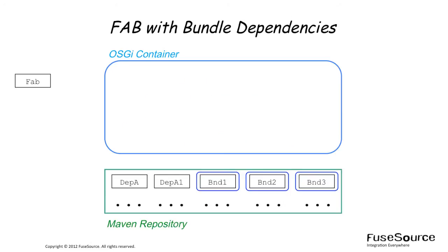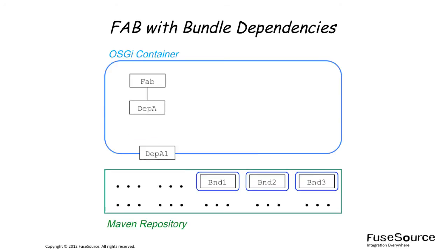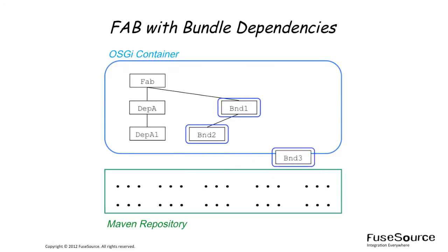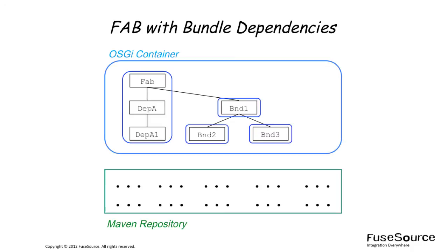In reality, when you deploy a FAB, its dependencies are neither completely shared nor completely non-shared, but a mixture. By default, any dependencies that are plain JARs are treated as non-shared, and any dependencies that are OSGI bundles are treated as shared. The final option shows the typical mix: after installing the FAB and downloading all dependencies from Maven, the FAB runtime deploys OSGI bundles as OSGI bundles, and plain JAR dependencies are embedded in the FAB bundle. When you start this hybrid FAB using the FAB start command, the bundle dependencies are started first, and then the FAB bundle itself.